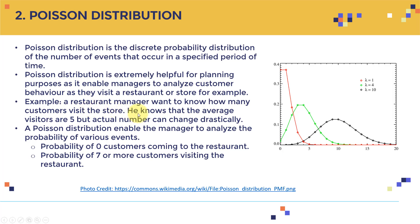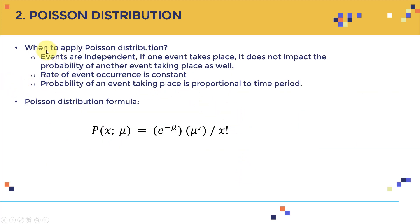Assume you are a restaurant manager and you want to know how many customers visit the store. You only know the average is five visitors, but the actual number changes drastically — you might find one, fifty, or none throughout the day. A Poisson distribution enables you to analyze the probability of various events: for example, the probability of zero customers visiting is X, or seven or more customers visiting is Y.